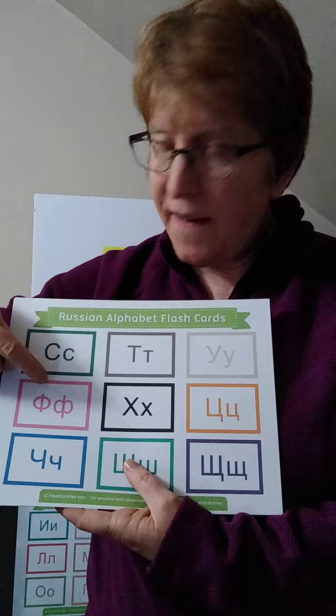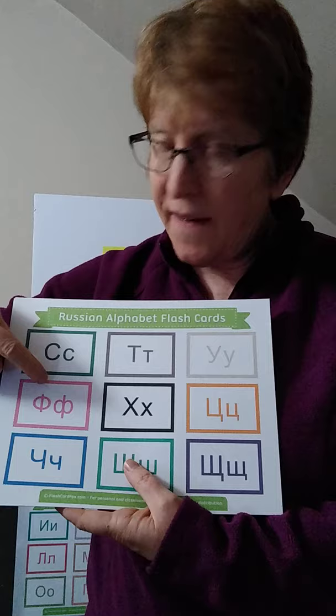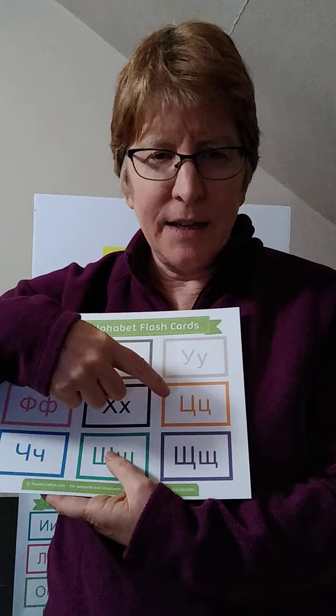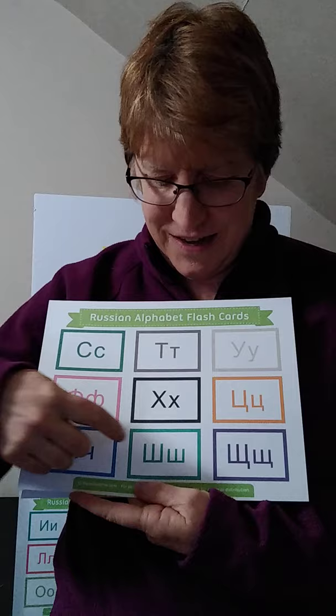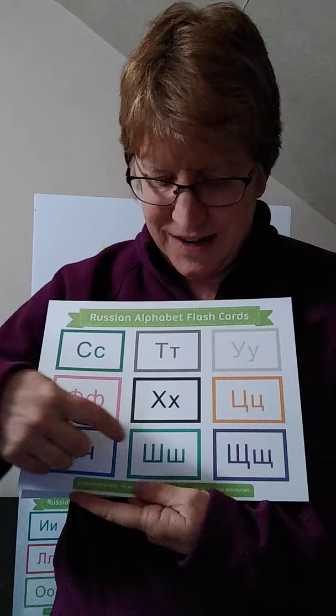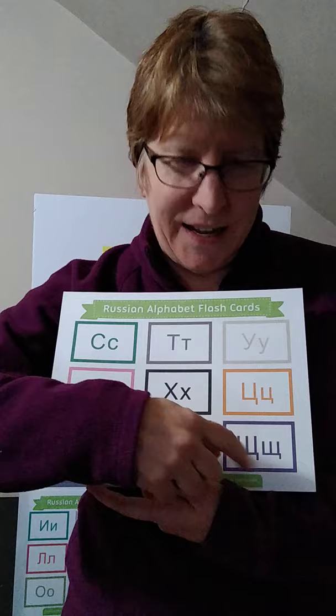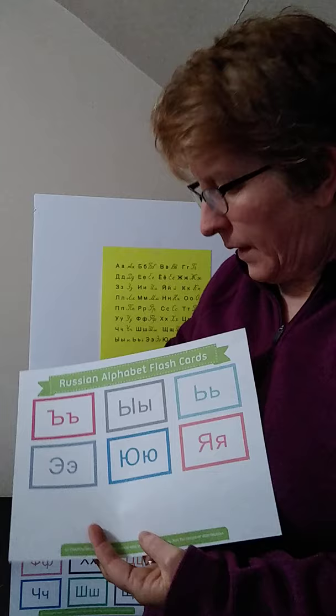S, T, U, F — this is their F. CH — they don't have an H, but they have a H like clearing your throat a little. C — it's like a TS. CH — this is a CH sound. So that's the brilliance of Russian: they make one letter for CH, and they have one letter for the SH sound. Then there's a SCH sound — it's like a SH and a CH together. We don't really have that in English, but if you were to say 'fresh cheese' fast, you'd have that sound.